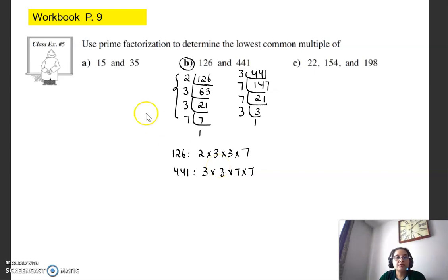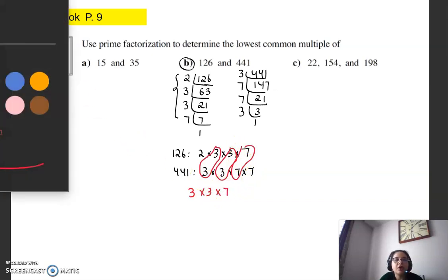So in order to find the LCM, the first thing you're going to do is look for your prime factors because we don't want factors to be repeating. So this three is repeating, it's common. This three is repeating, it's common. That's the GCF.